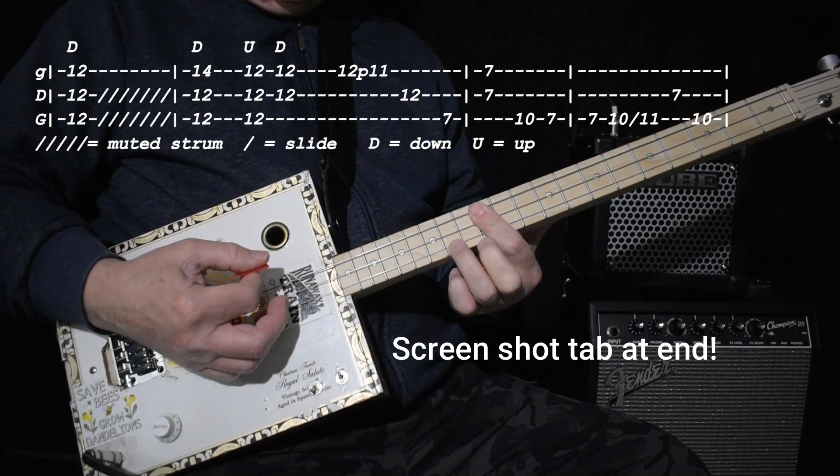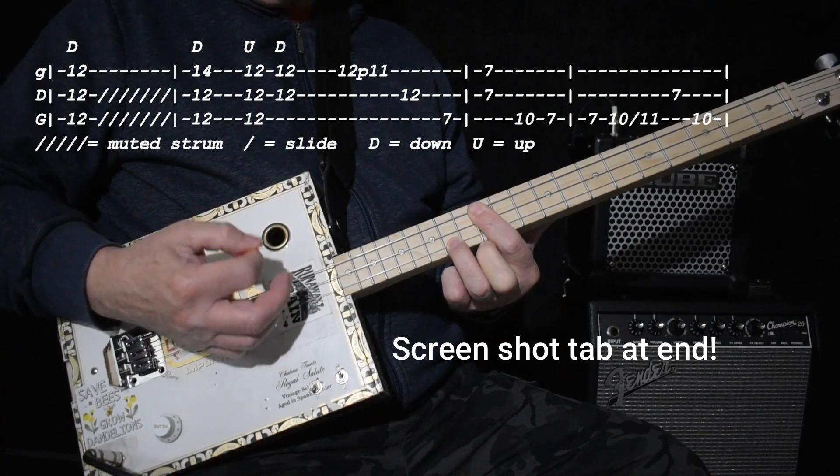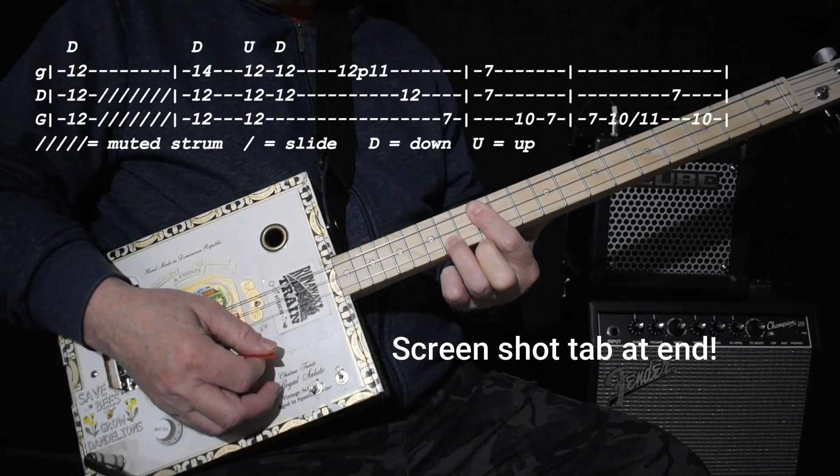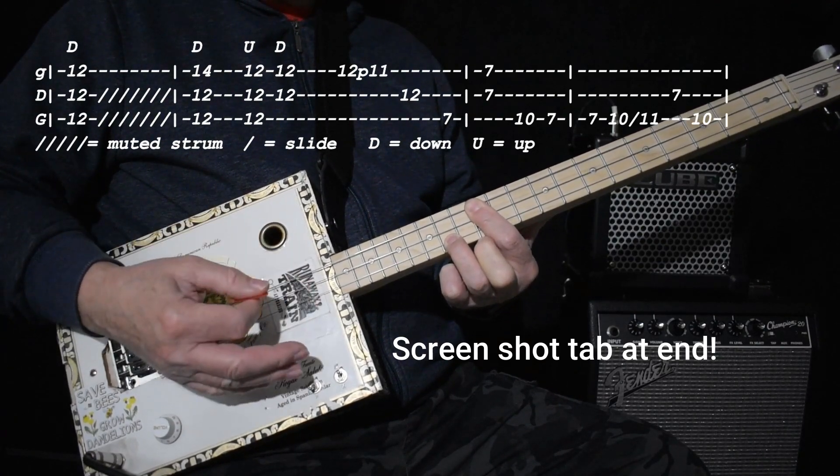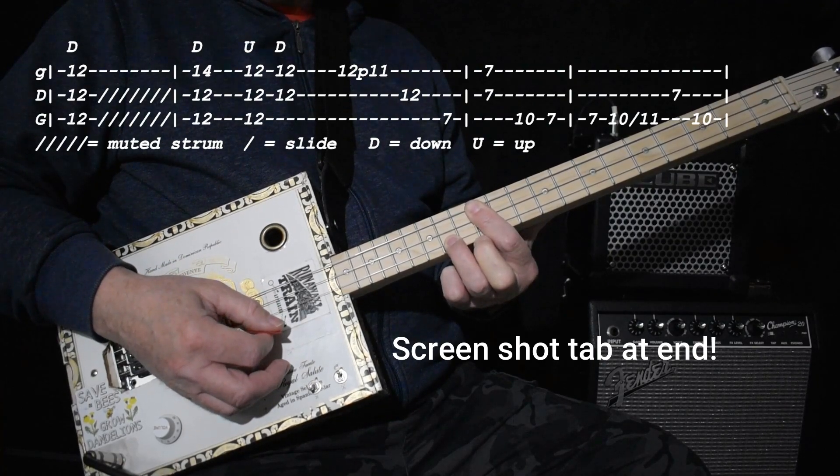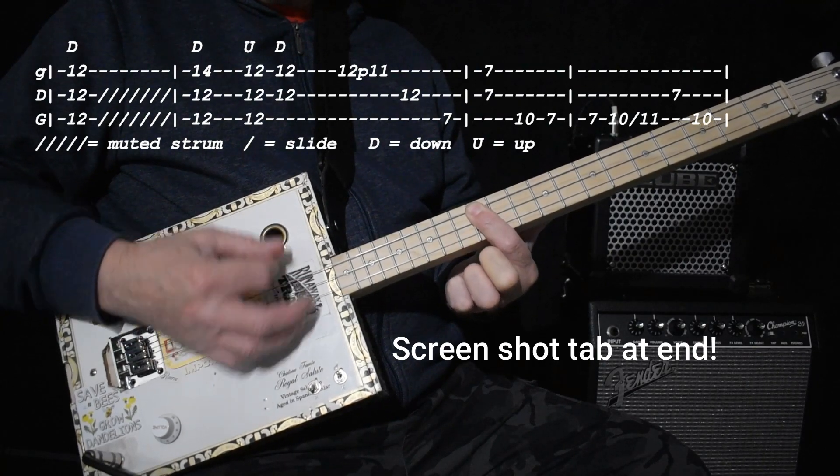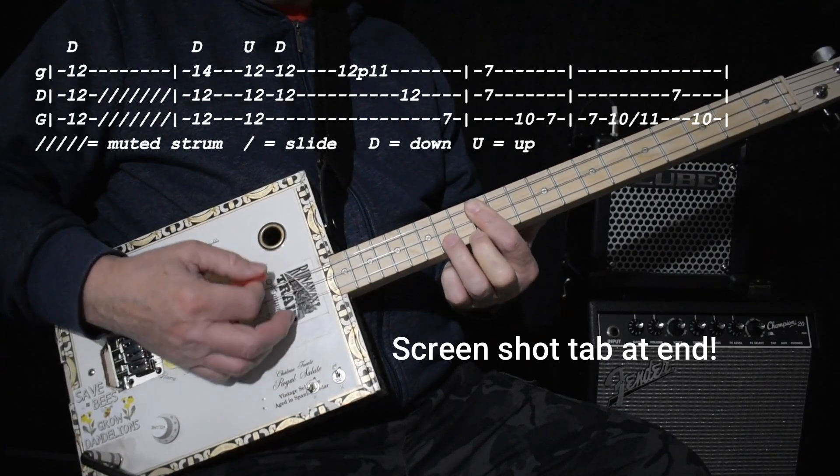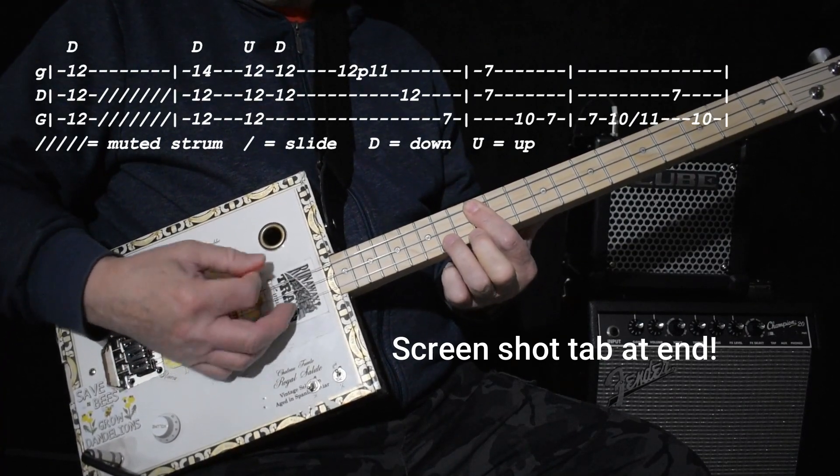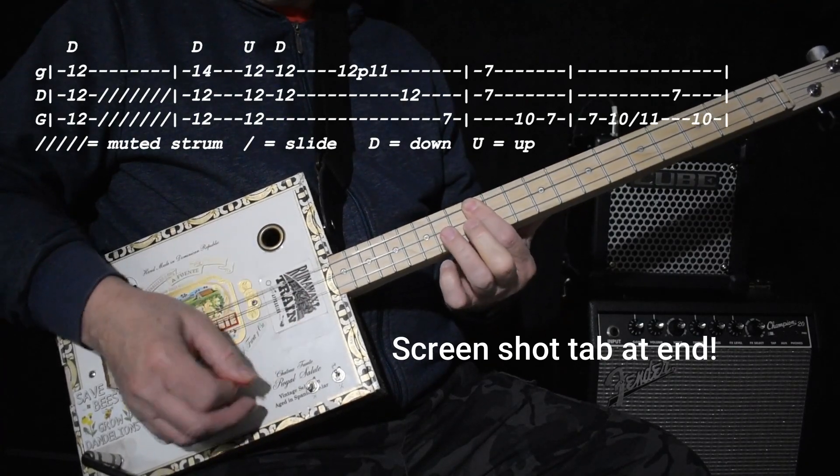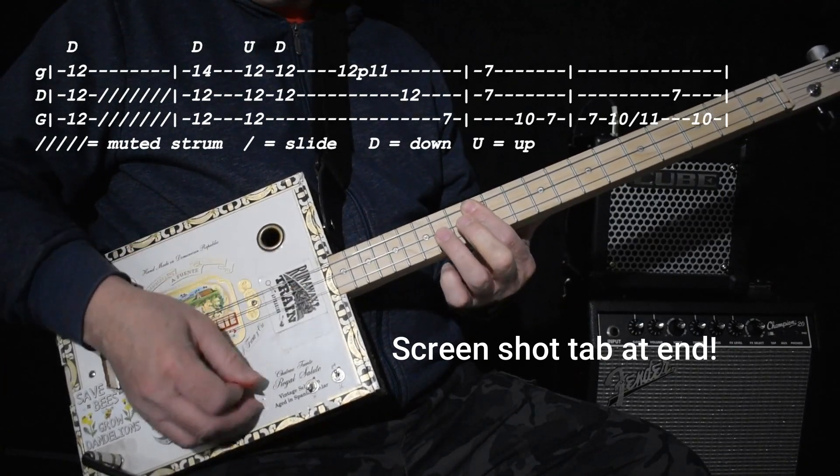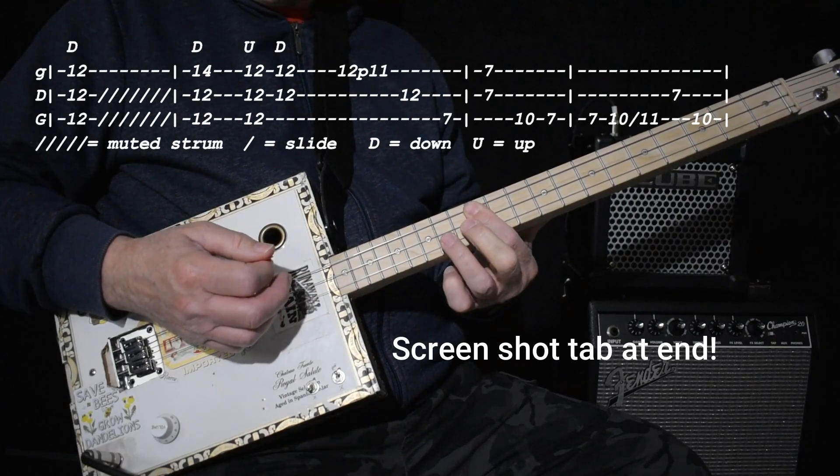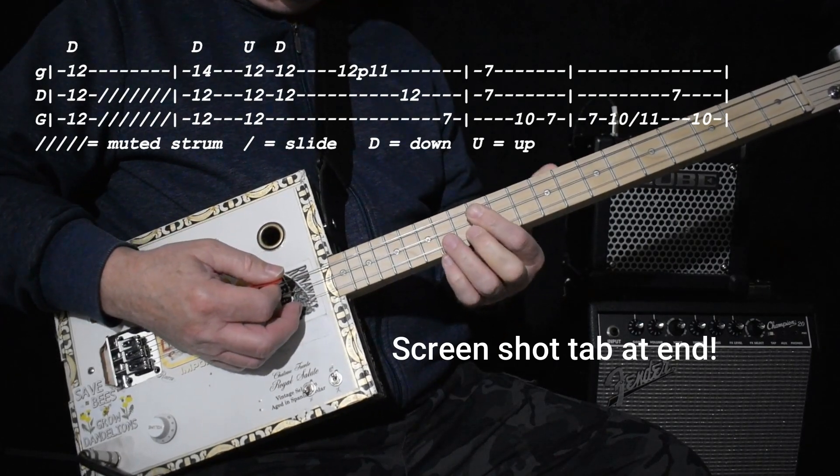Then we're going to add the 14 up here. We're going to hit that. [plays] Those are all downstrokes. And then we're going to go up and down on the 12th fret. [demonstrates]